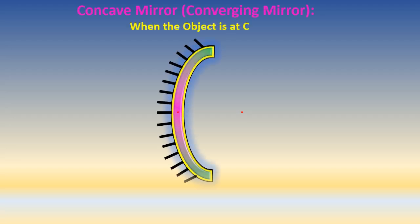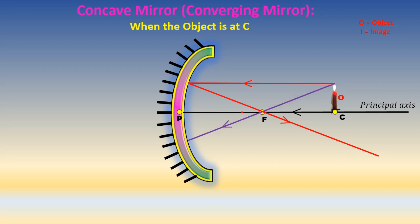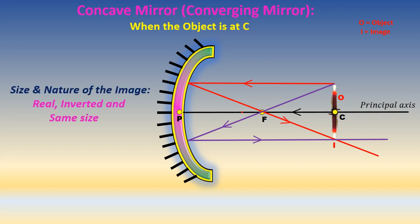Concave mirror, or converging mirror, when the object is at C. Principal axis, P, F, and C. The first ray goes parallel to the axis and passes through the focus. The second ray passes through the focus and upon reflection becomes parallel to the axis. The image is formed. Size and nature of the image: real, inverted, and same size.